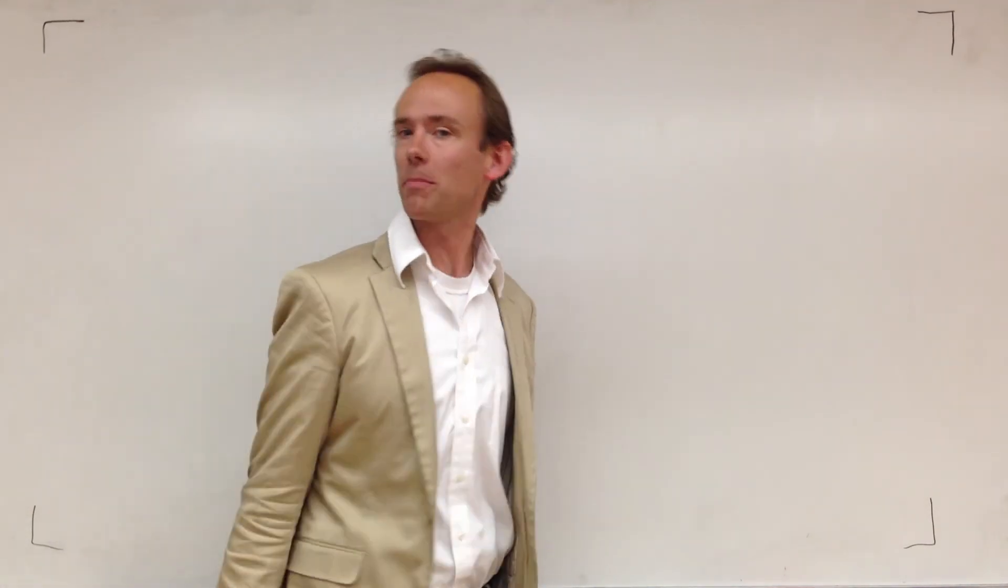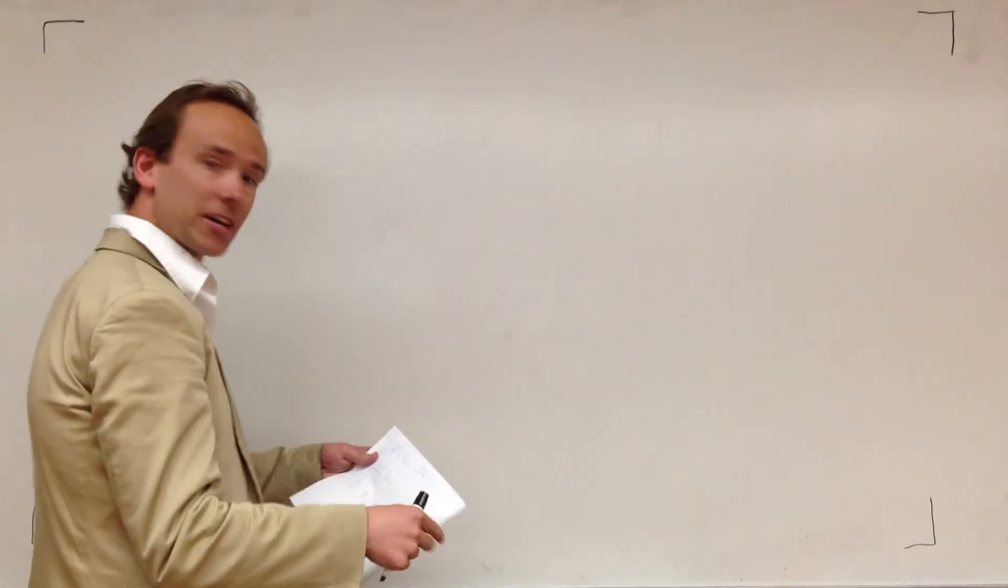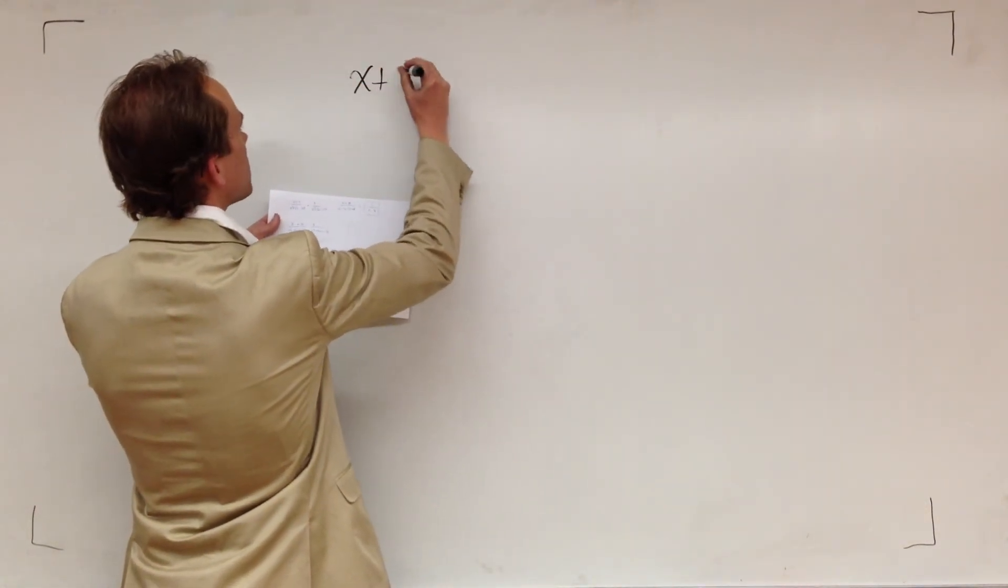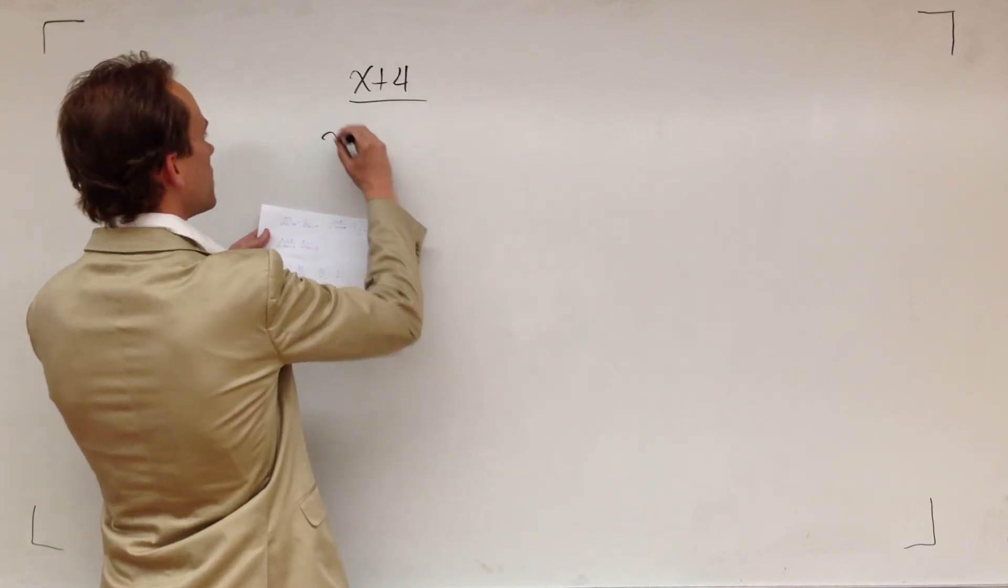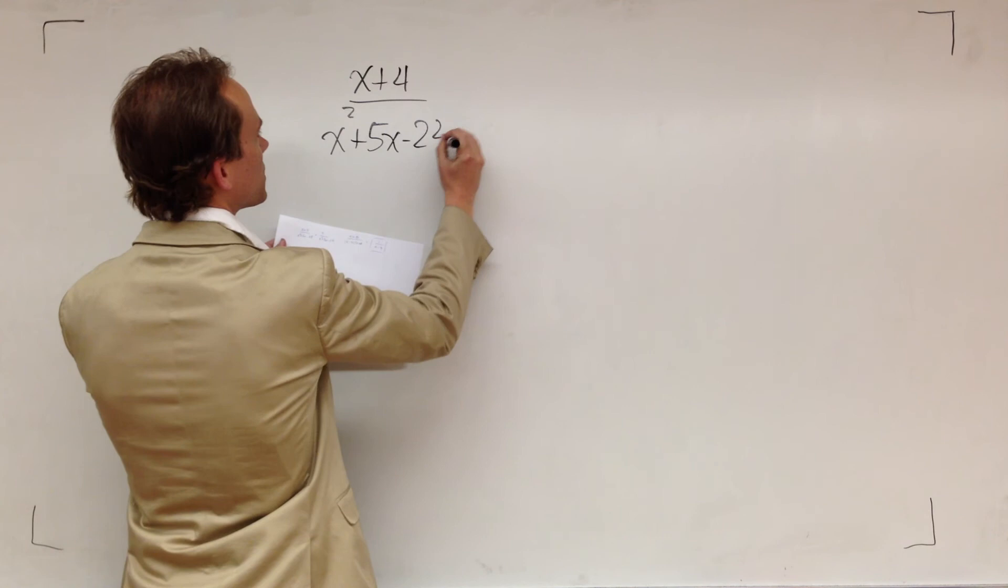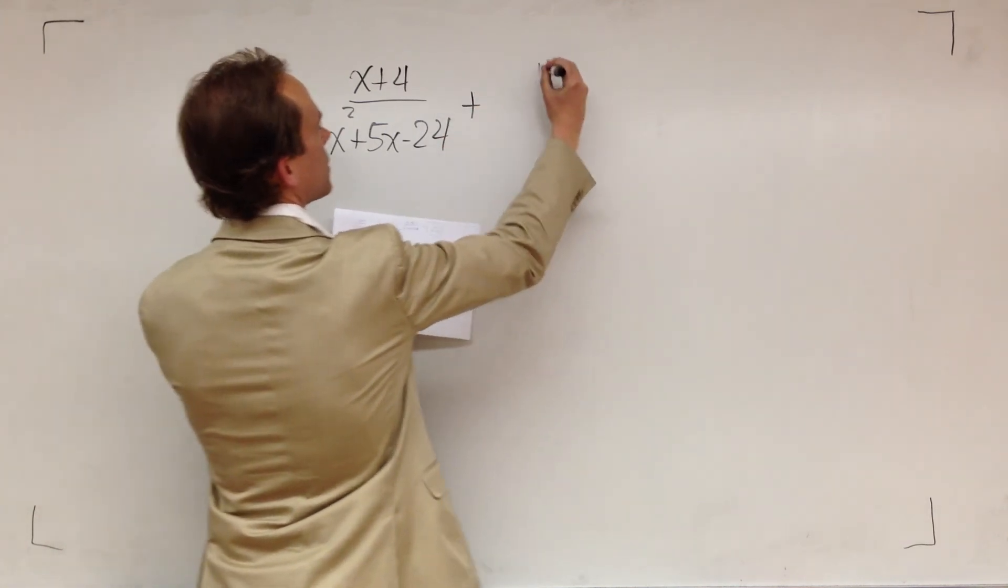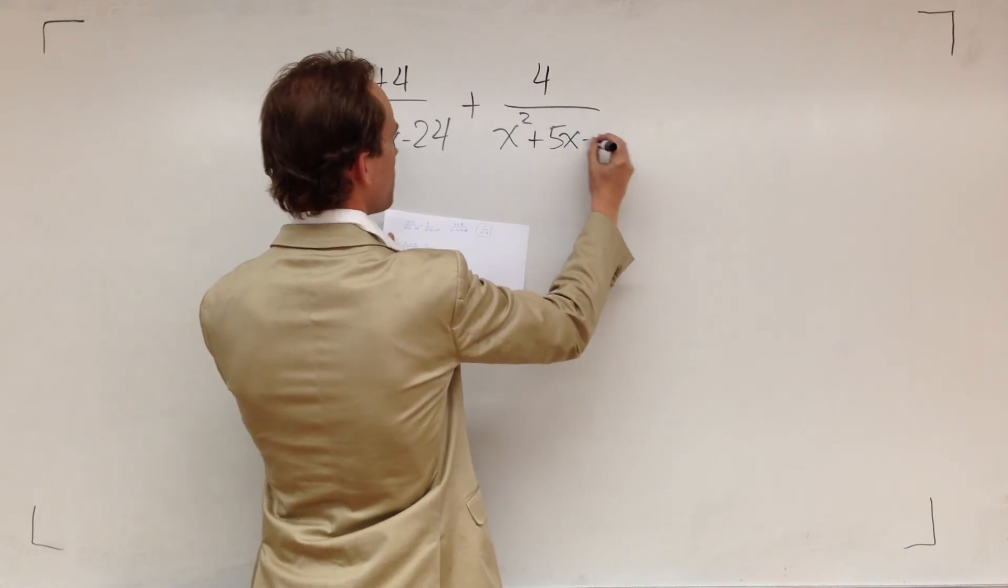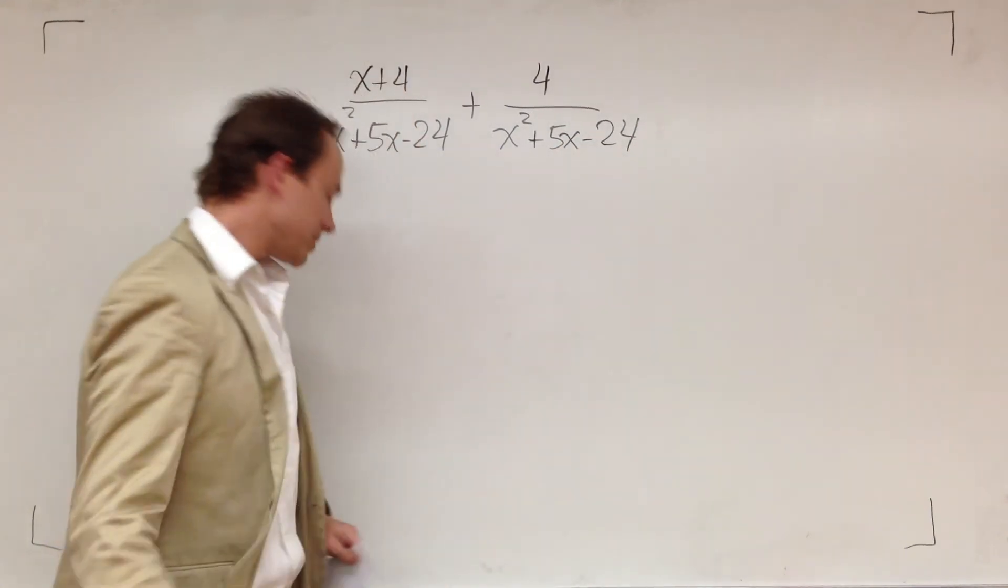That's what we're all about today. So here's the first one. I'm just going to get right to it. We're going to go with x plus four over x squared plus five x minus twenty four plus four again over the same denominator.